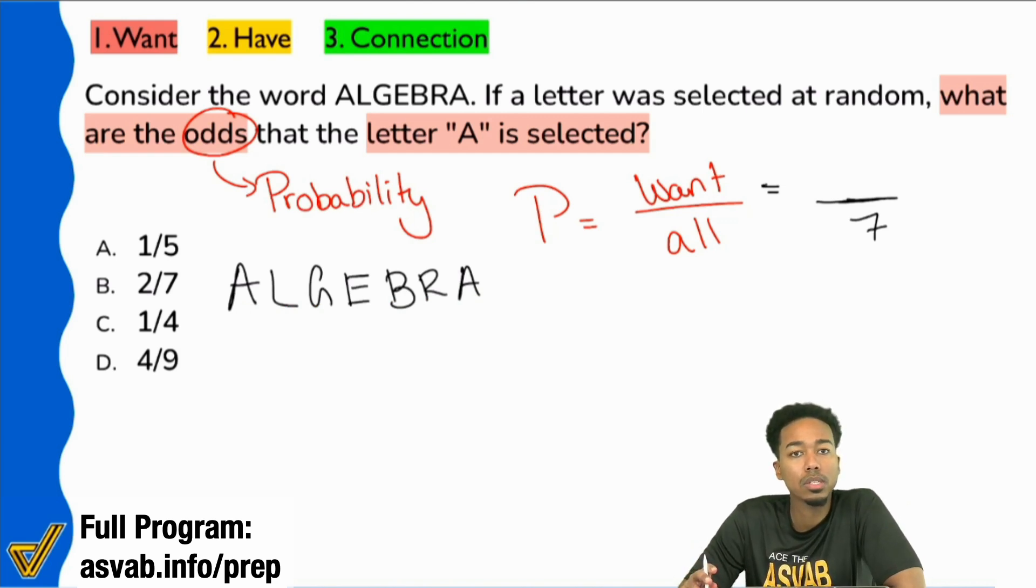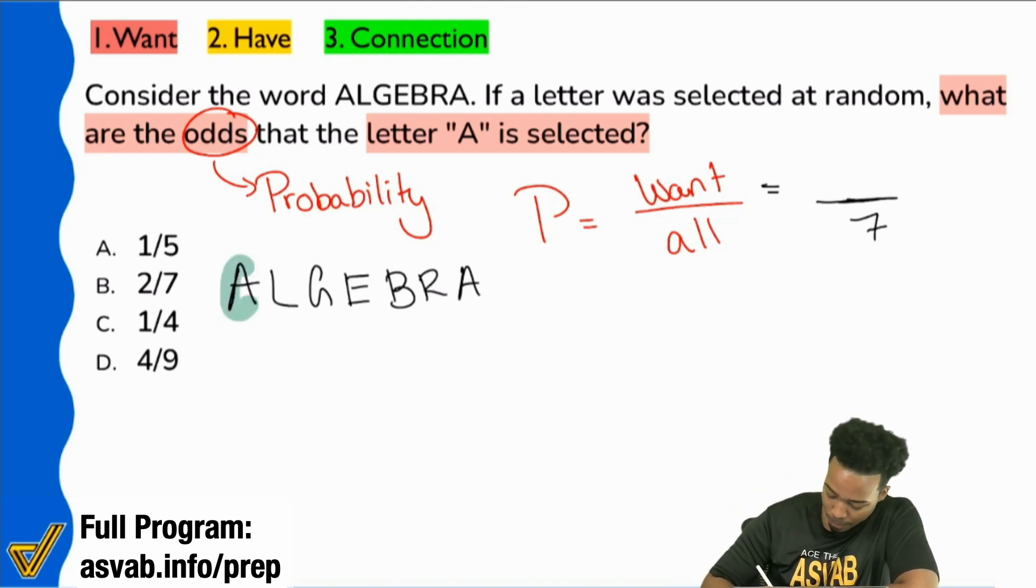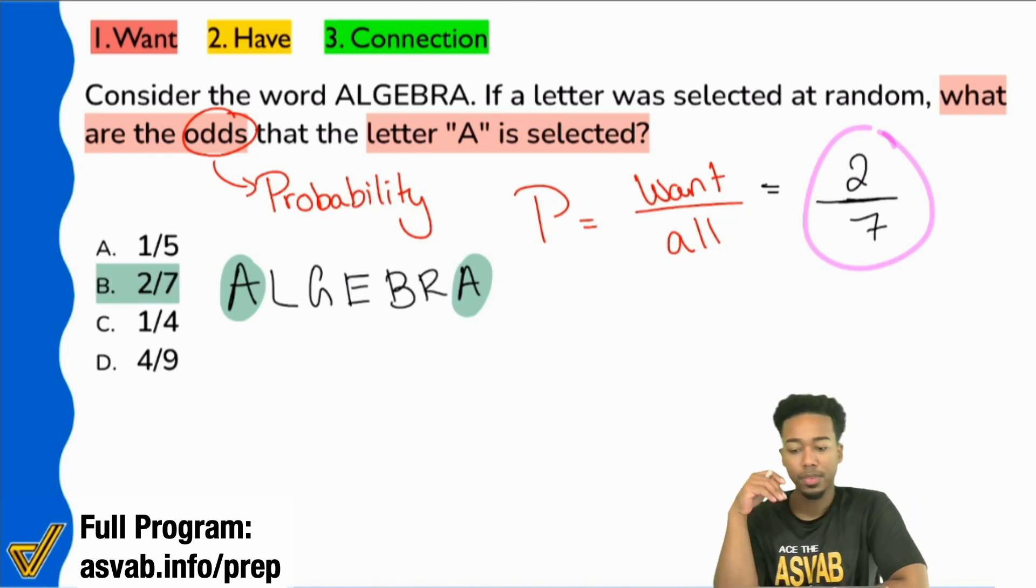And we are looking to see what are the odds of picking which letter? Yeah, the letter A. Let's see how many A's we have in here. One, two. We have two of these letters of the seven fitting the description of what we want. Boom, two out of seven. And that's why the answer is B, two sevenths.